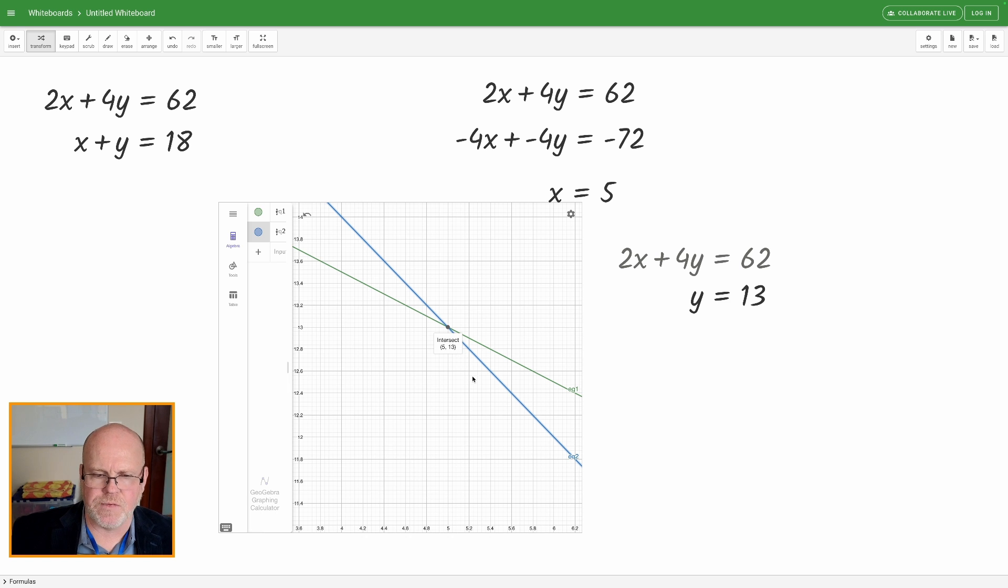Oh, I can kind of zoom in and I can see that that value right there is indeed 5, 13. So the x value of 5, the y value is 13. And that is your quick workaround for how to solve a system of equations using the elimination method.